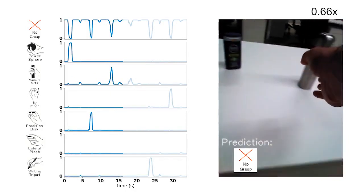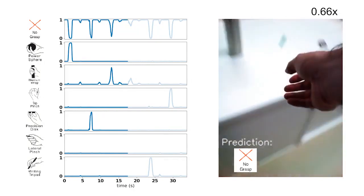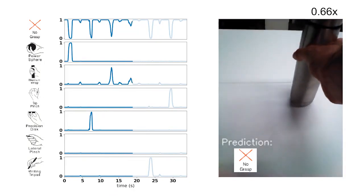Next is a coffee thermos, which will produce a probability spike in medium-wrapped, but fails to predict the grasp.